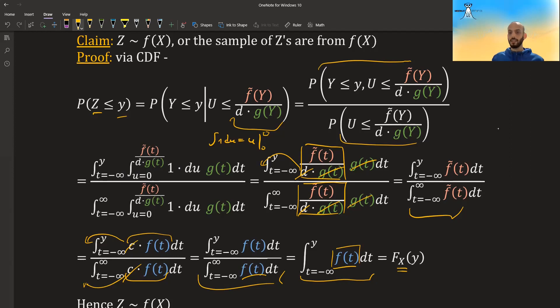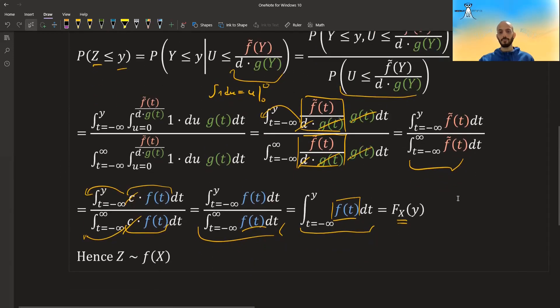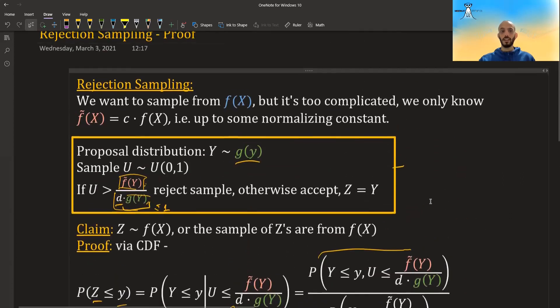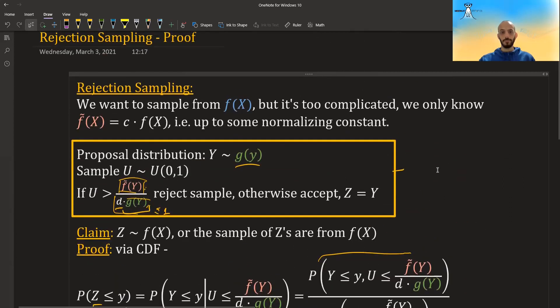So even though we do not know f(t), it turns out that this algorithm, the z's that we are getting is actually coming from this f(t). And this is the proof why rejection sampling actually works. So thank you for watching and see you in the next video.